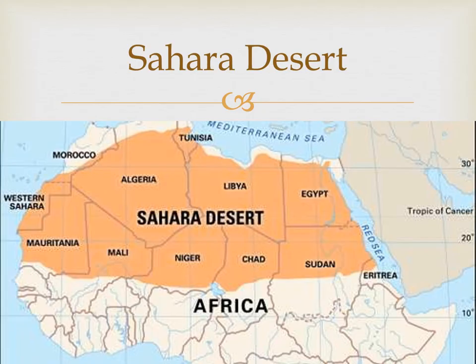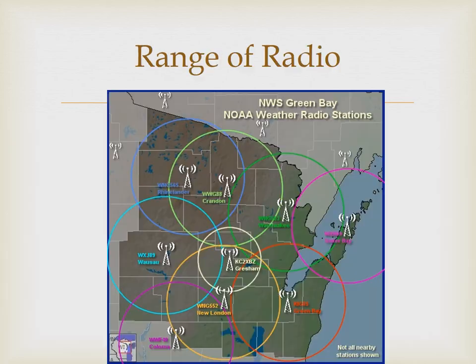The Sahara Desert — what type of region would this be: formal, functional, or perceptual? How about the range of a radio station and their radio signals — formal, functional, or perceptual?